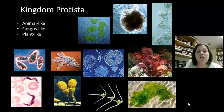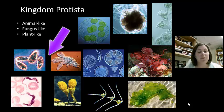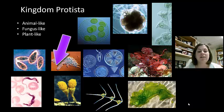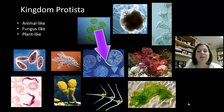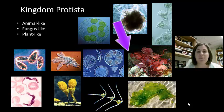This group can be divided into three main groups: the animal-like protists, which are called protozoa; the fungus-like protists, which include water and slime molds; and finally the plant-like protists, which are the algae.